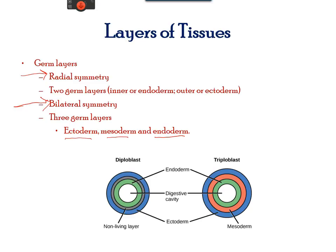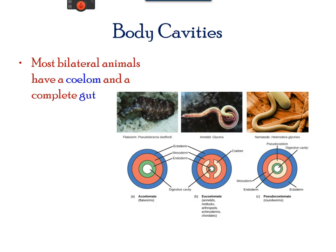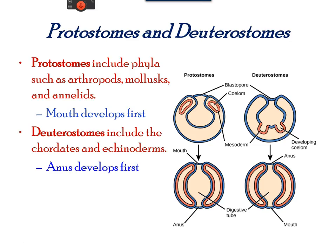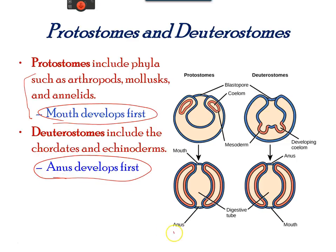An internal body cavity called the coelom is formed from the mesoderm. As seen in the images of a flatworm, annelids, and the nematode, each has a body cavity lined by mesoderm tissue — hence they have a gut and a coelom. Protostomes include roundworms, mollusks, and arthropods, and develop the mouth as the first opening to the gut. Deuterostomes include animals which develop a second opening on the dorsal surface called the anus. The majority of invertebrates are protostomes.